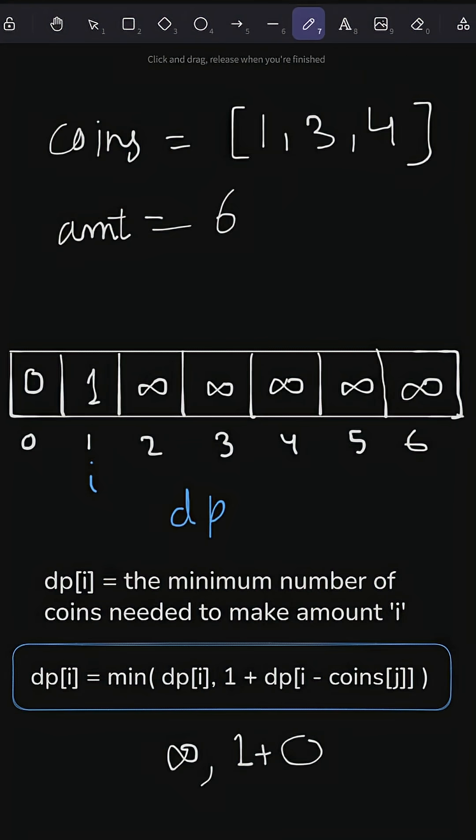Then we move j. We see that this amount 1 is already less than the coin that we are trying out. This doesn't make sense. Even i minus coins[j] will become negative and this index will go invalid. End the loop on j and move i further ahead.